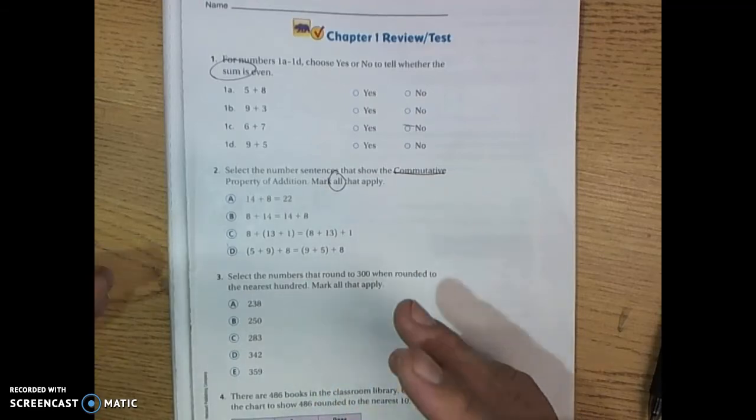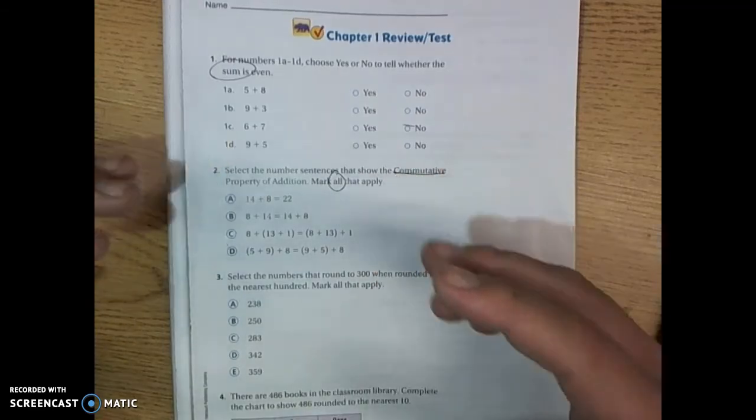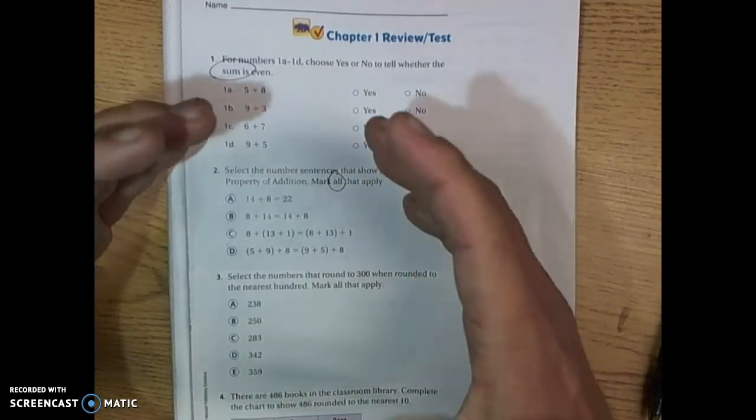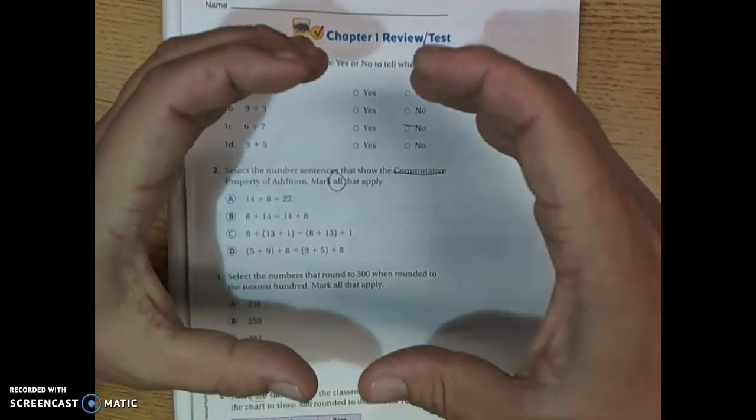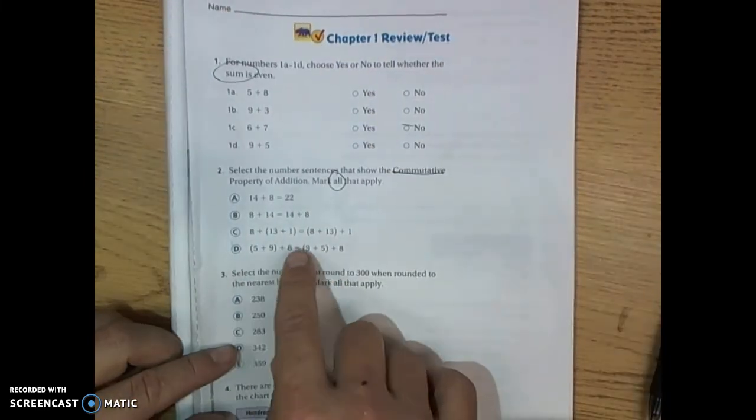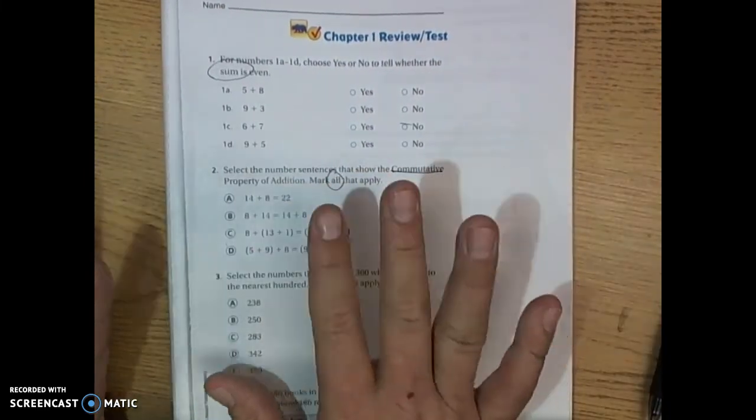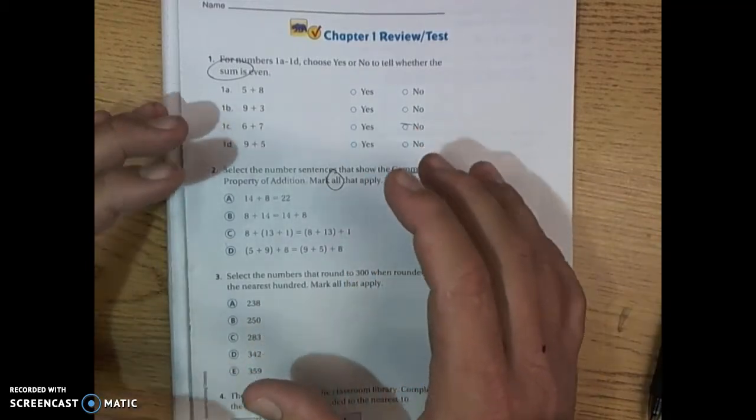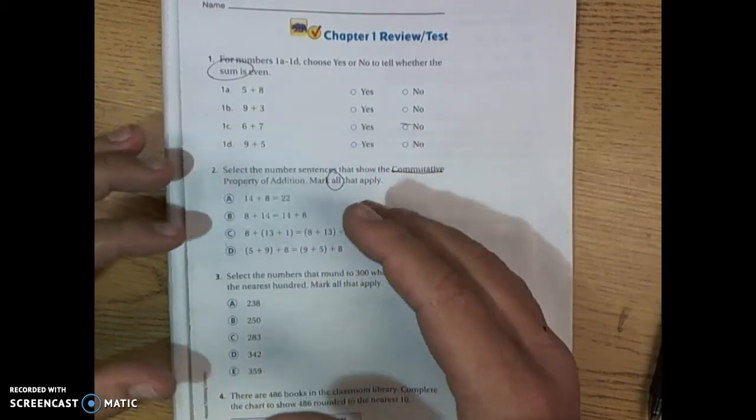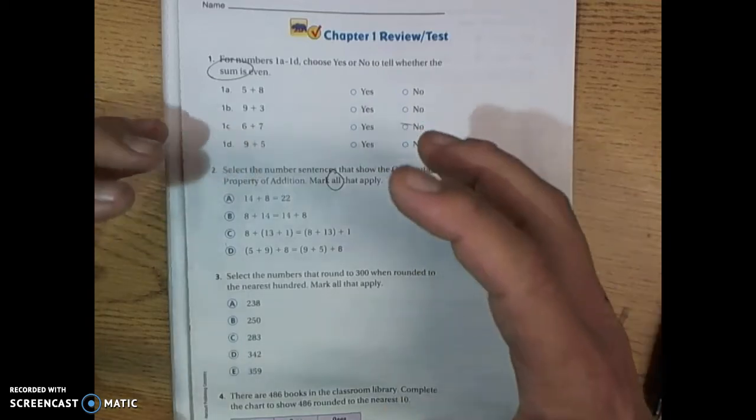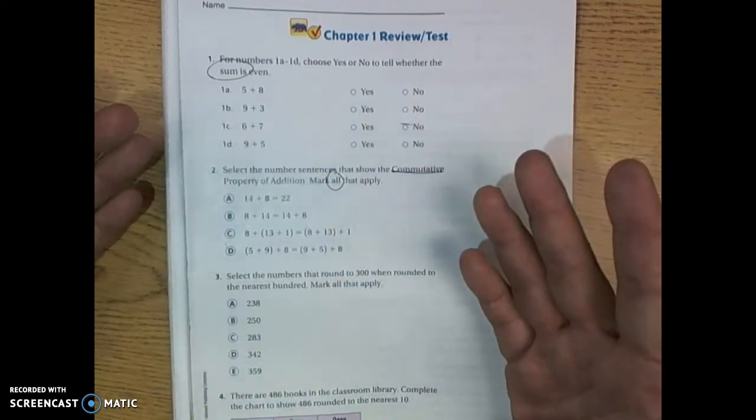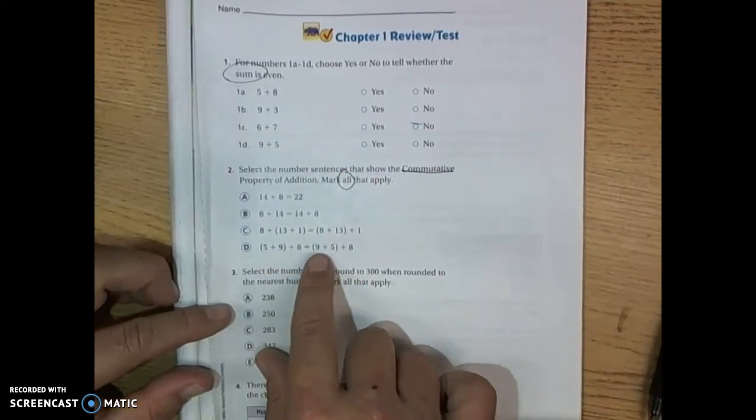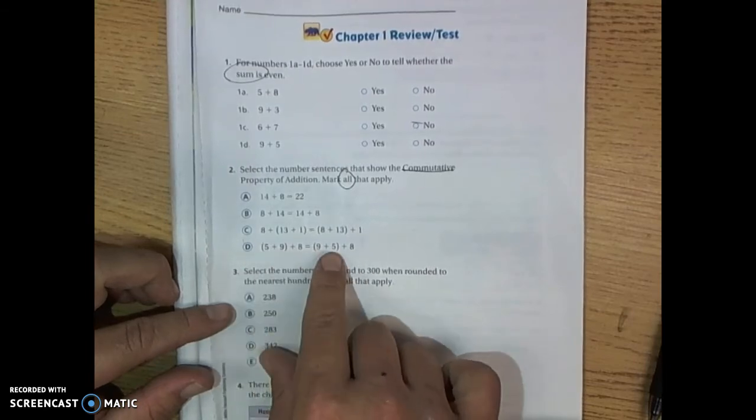The commutative property can also be with the associative property. So if you see parentheses, the associative property—that doesn't mean that the commutative property is not there also. You can have the associative property and the commutative property both at work or both involved in one problem.